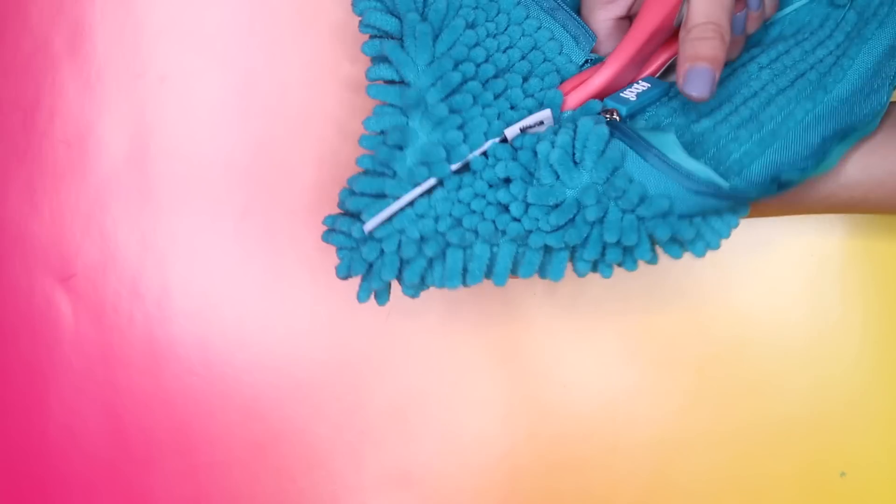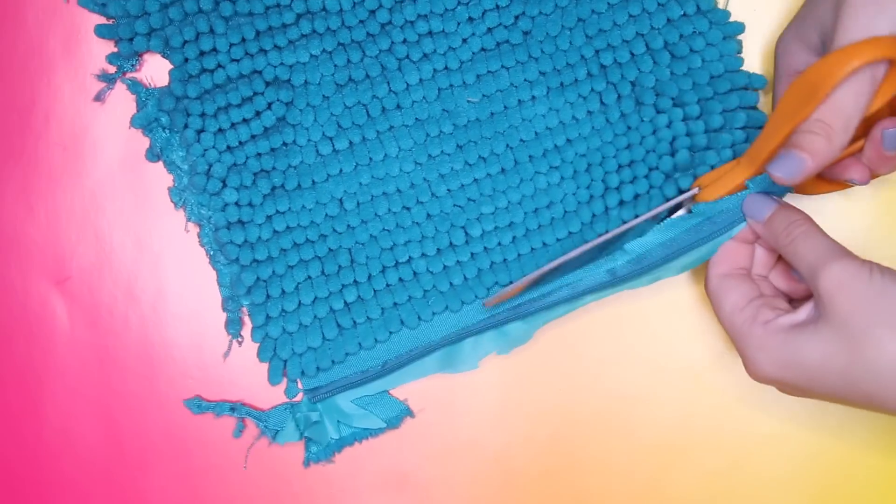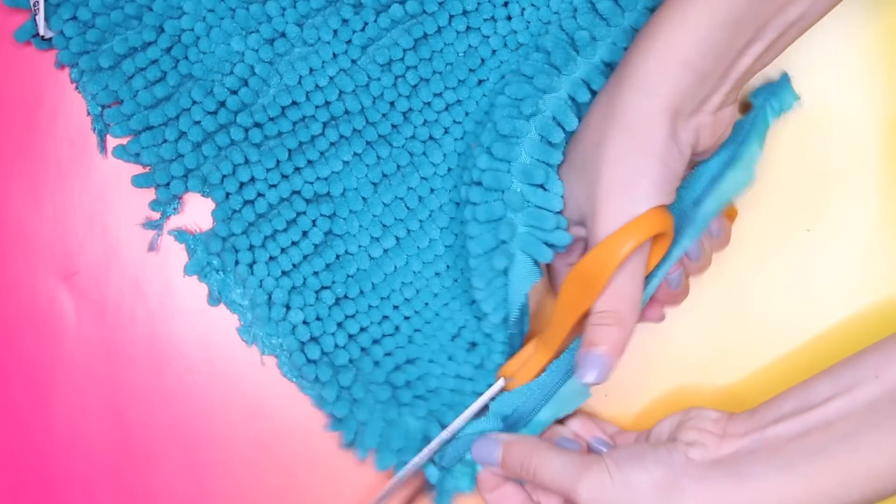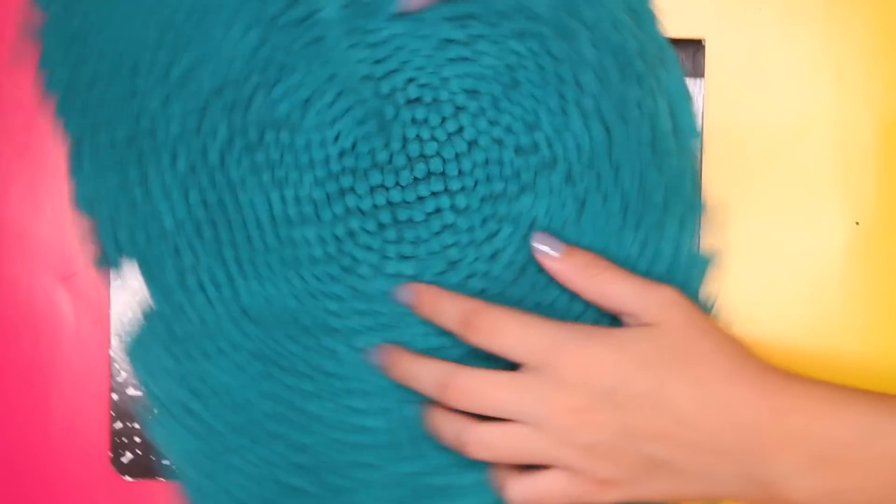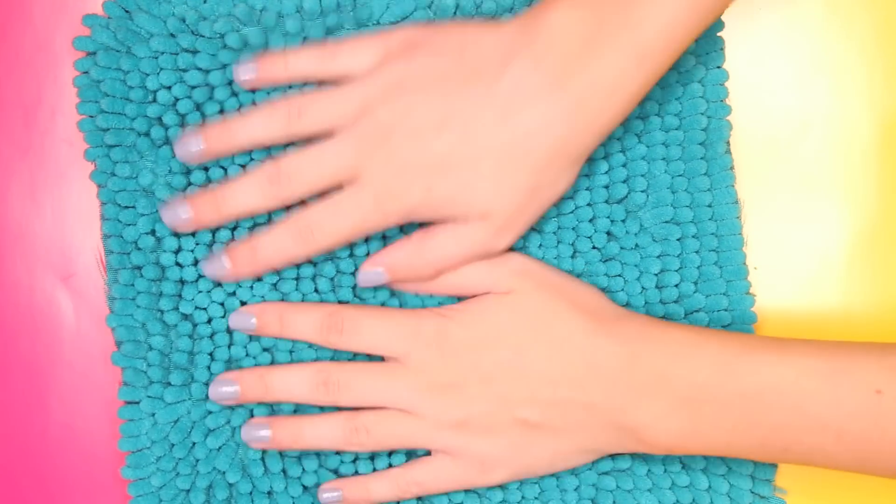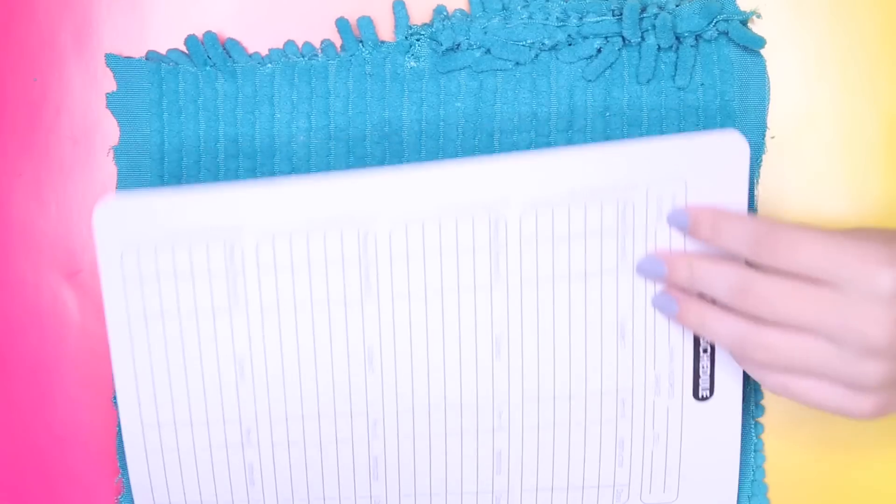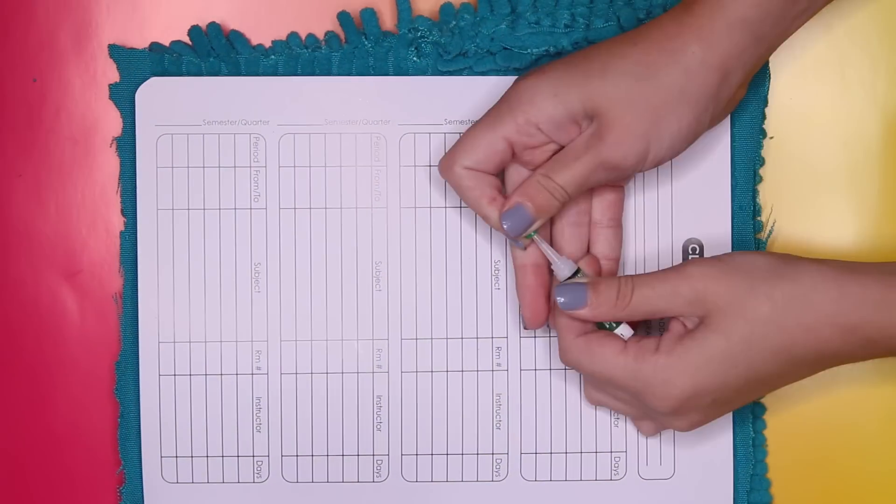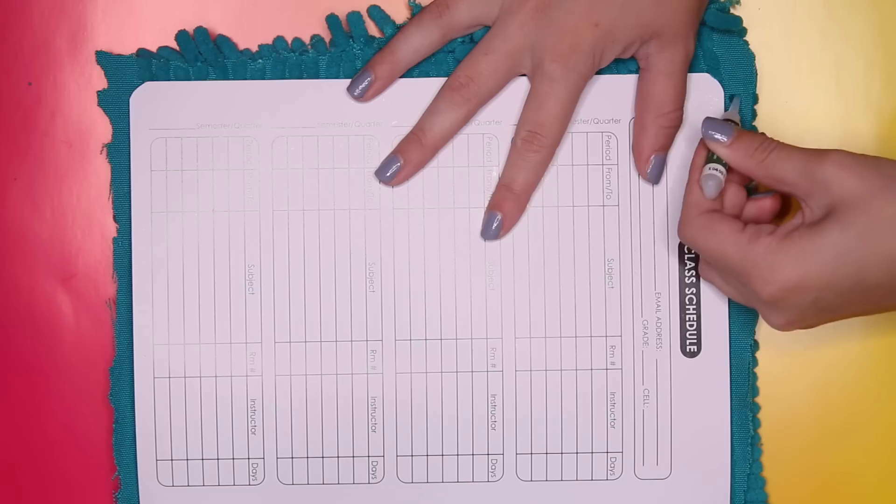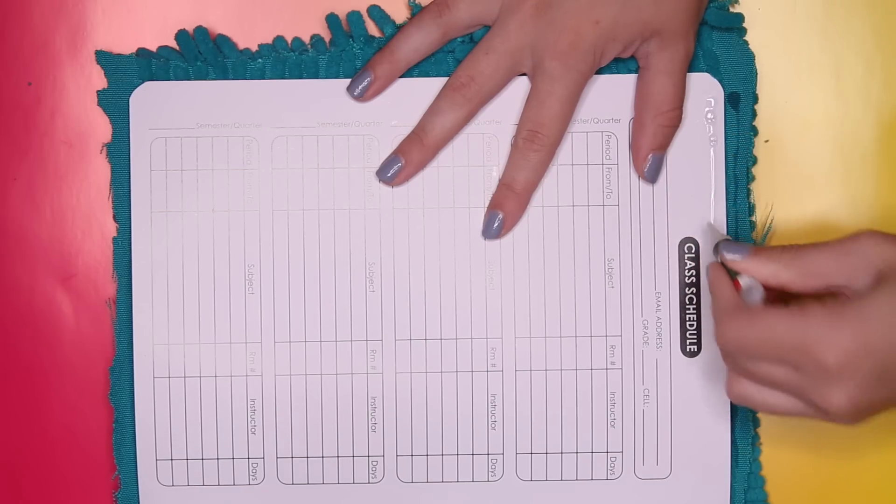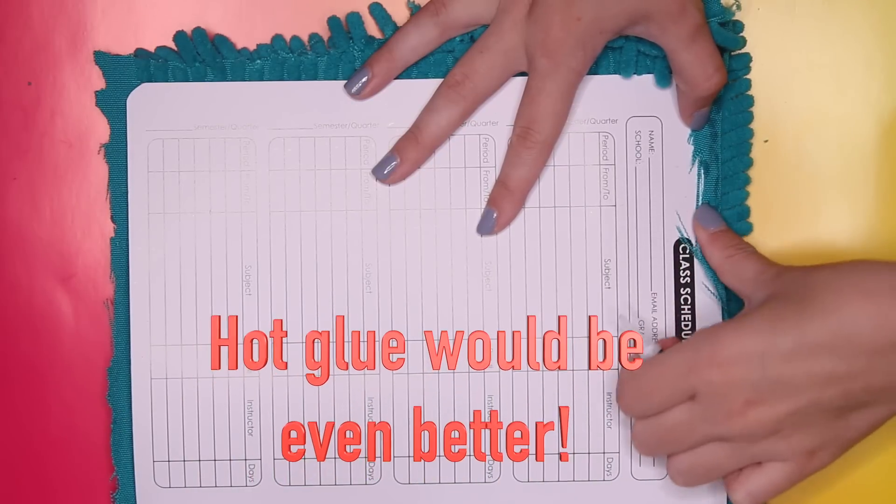After cutting down both sides of the pencil pouch and cutting off the zippers, you will have this rectangular piece of fabric that fits right on top of the notebook. Then I opened up my notebook and lined up the material with the edges of my notebook and I glued down three of the edges out of four with some crazy glue.